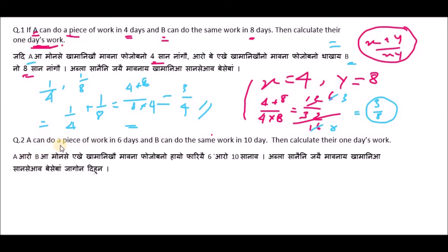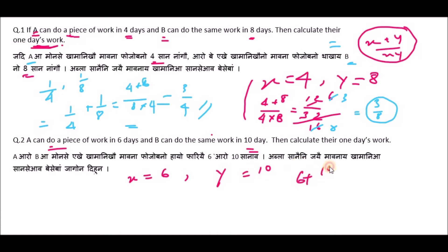Next question: A can do a piece of work in 6 days and B can do the same work in 10 days. Calculate their combined one day's work. Using the formula: 6 plus 10 divided by 6 into 10, which equals 16 divided by 60.